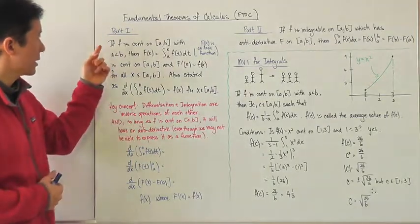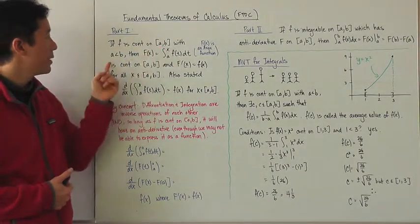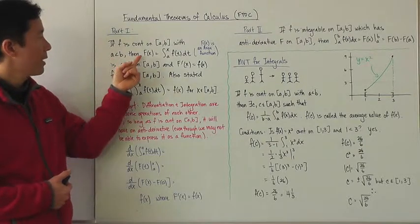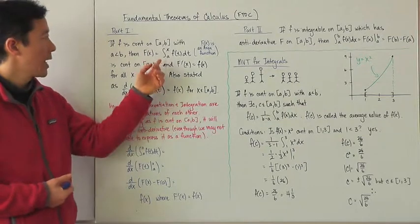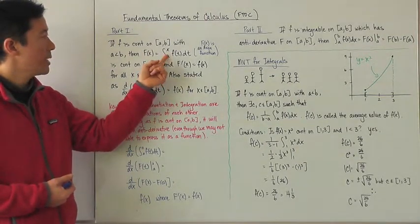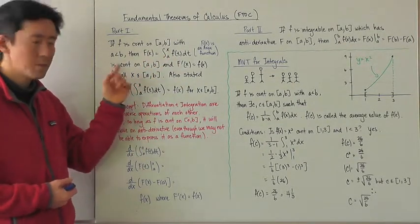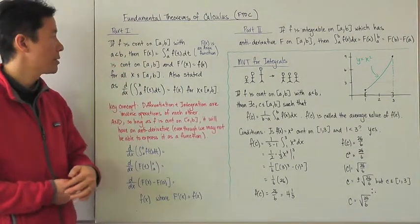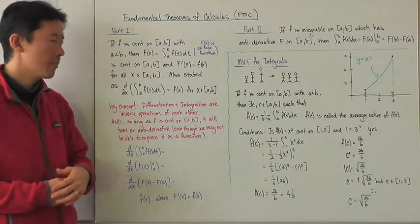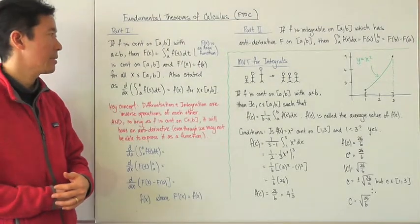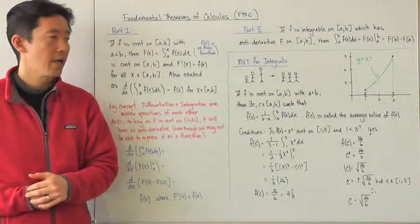So let's go ahead and restate this. If f is continuous on the closed interval [a, b], with a less than b, then capital F of x, which we said is an area function, is going to be the integral from a to x of f of t, dt, and will also be continuous on the closed interval [a, b]. And capital F prime of x is going to be equal to f of x for all x on that closed interval [a, b].